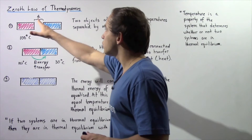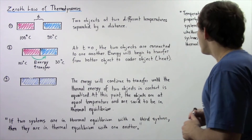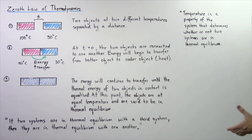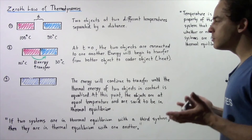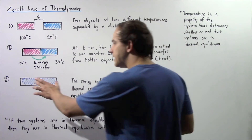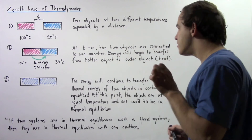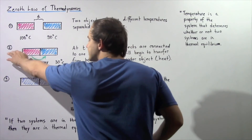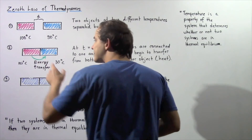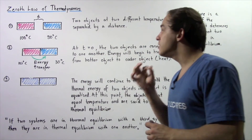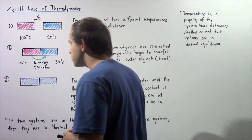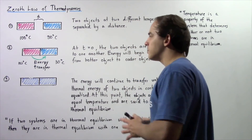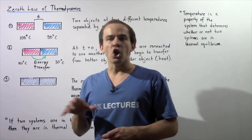Now, how is the zeroth law of thermodynamics related to temperature? Temperature is a property of a system that determines whether or not two systems are in thermal equilibrium. If two systems are in thermal equilibrium, there is no energy flow between them. But if the two objects have a different temperature, as in case two, there will be a transfer of energy from the hotter object — the one with greater thermal energy — to the object with less thermal energy and lower temperature.